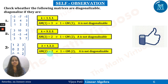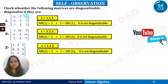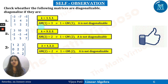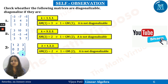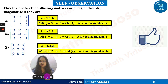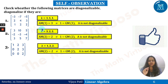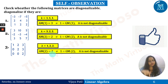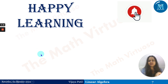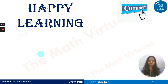This last slide is a self-observation slide with three practice matrices. Note that the last row of the third matrix is [0, 0, 2]. All three matrices are given as practice problems — do try them. Let me know in the comment section if you have any doubts. Thank you, happy learning.